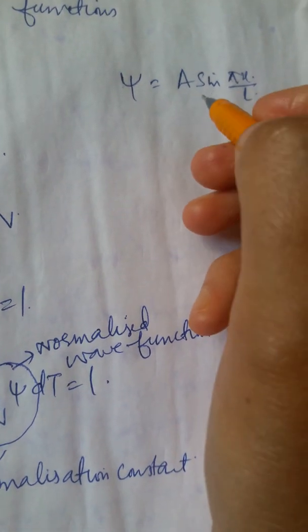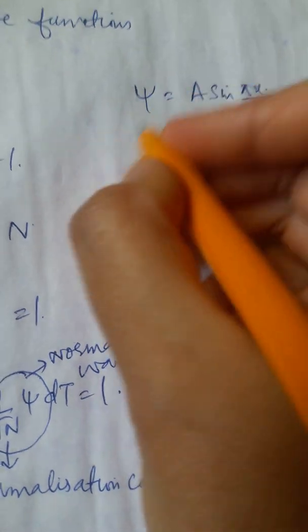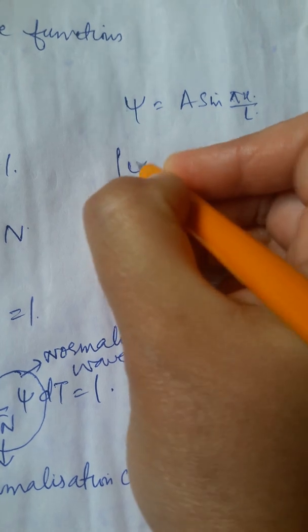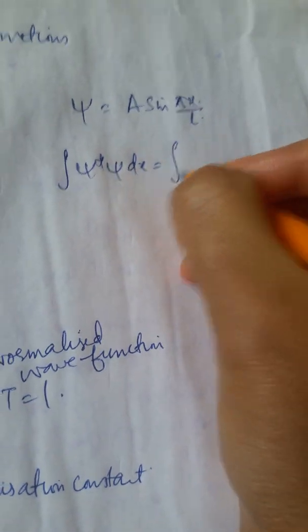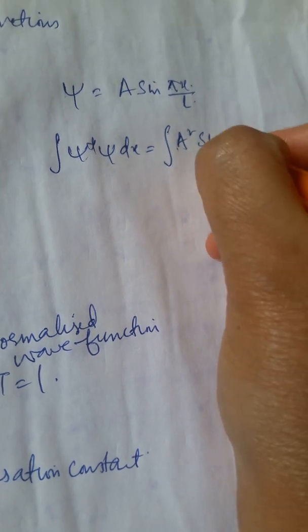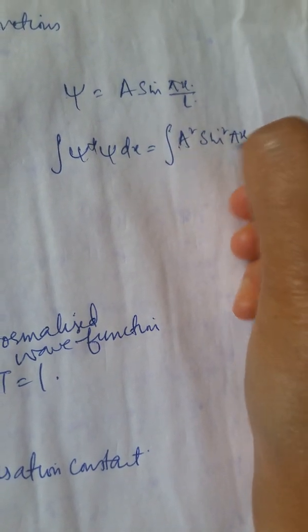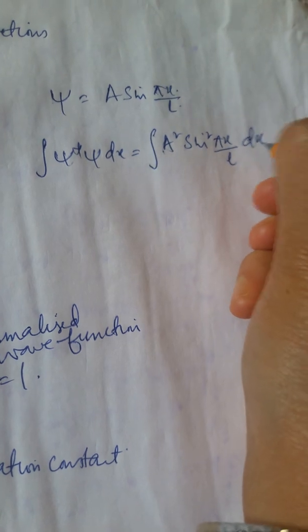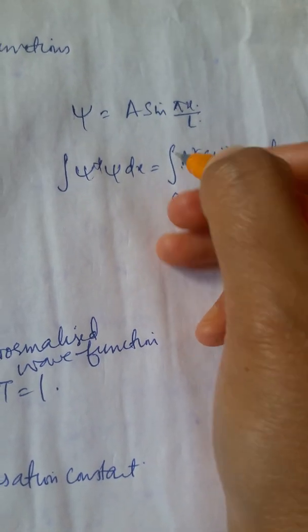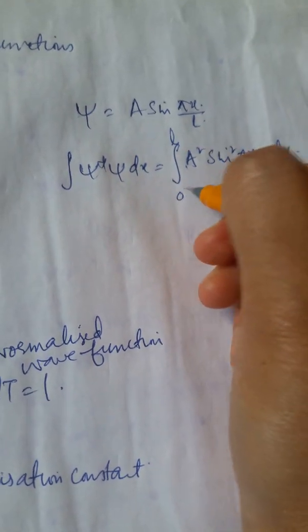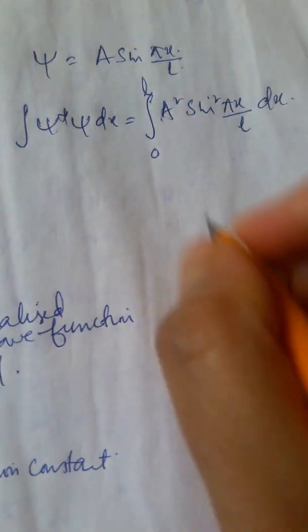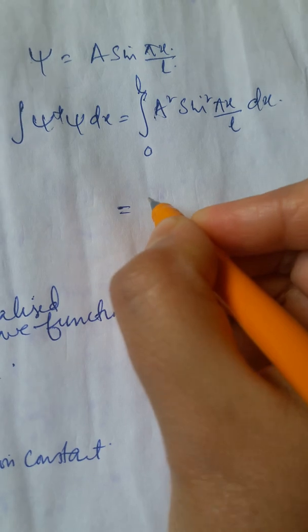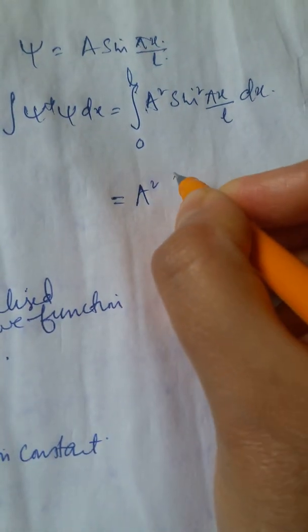Now, if we have to find this normalization constant A, we proceed as ∫ψ*ψ dx equals ∫A² sin²(πx/L) dx. Of course, the limits are from 0 to L, that is the length of the one-dimensional box in which the particle is staying.